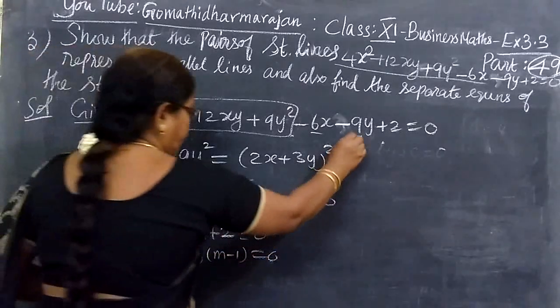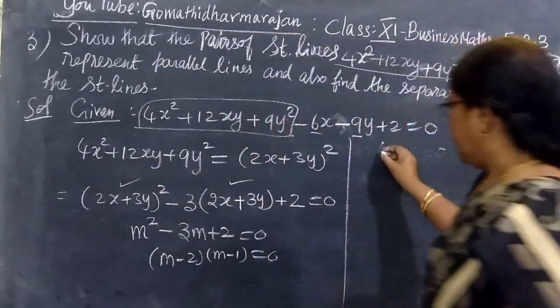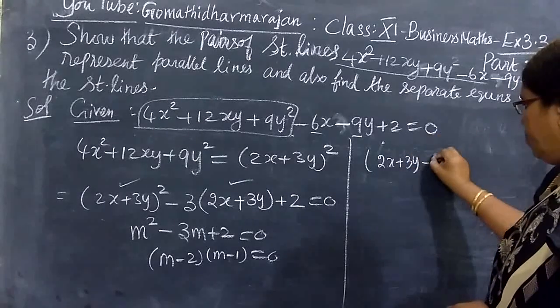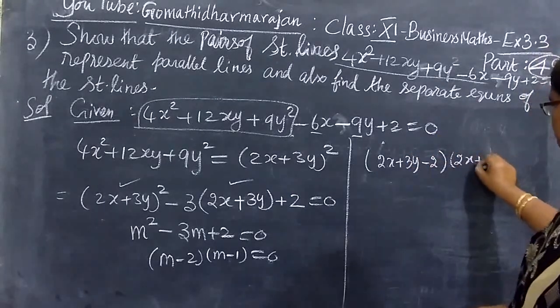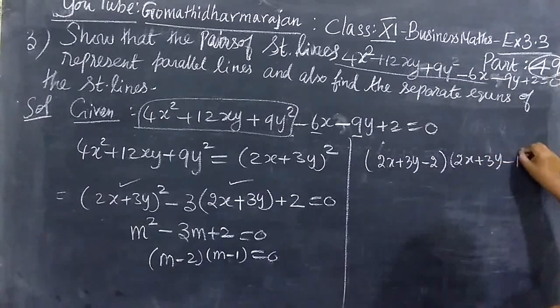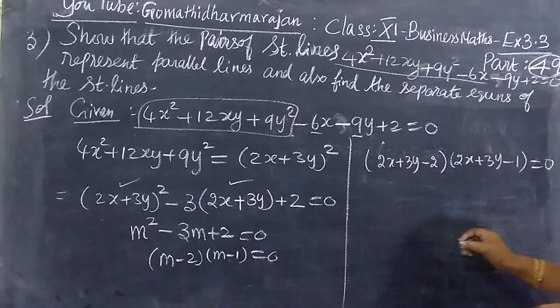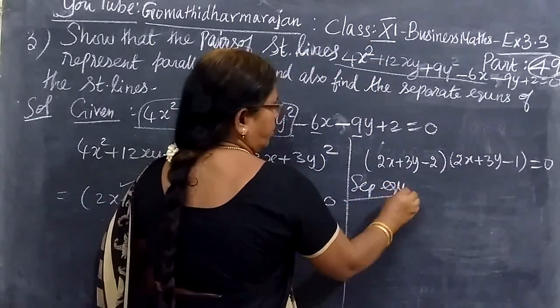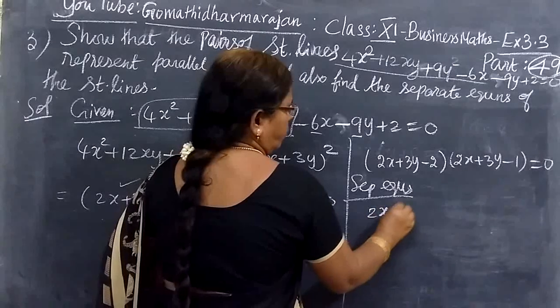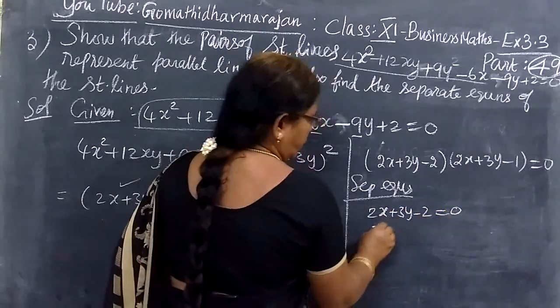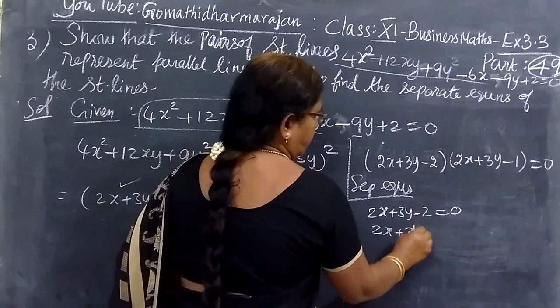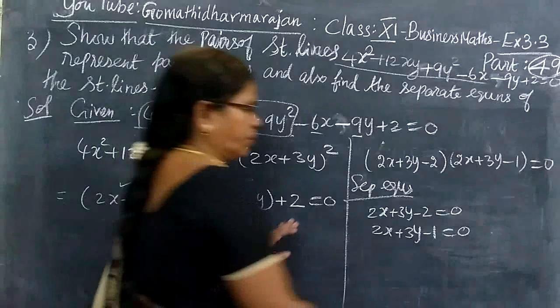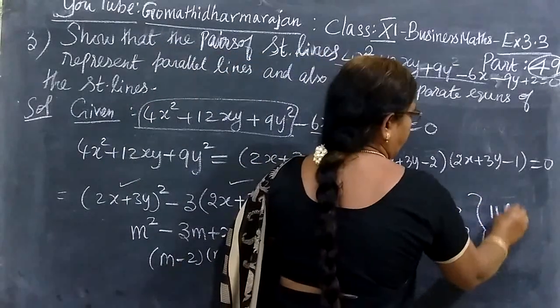You are getting (2x + 3y - 2)(2x + 3y - 1) = 0. Now, the separate equations are: 2x + 3y - 2 = 0 and 2x + 3y - 1 = 0.